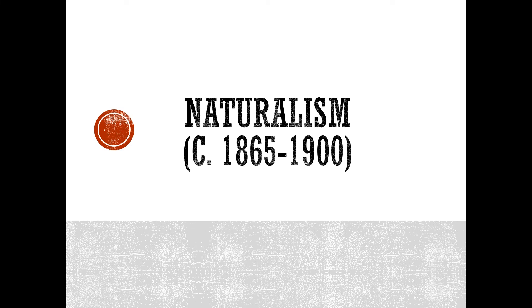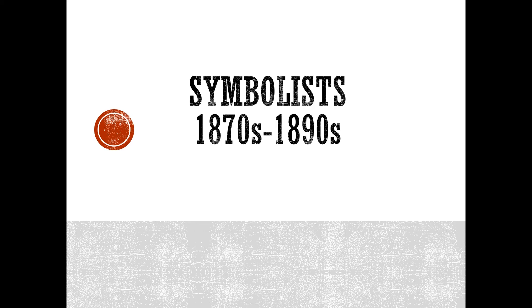Naturalism is a literary movement that used detailed realism to suggest that social conditions, heredity, and environment had inescapable force in shaping human character. Leading writers include Émile Zola, Theodore Dreiser, and Stephen Crane. Symbolists are a group of French poets who reacted against realism with a poetry of suggestion based on private symbols, experimenting with new poetic forms such as free verse and the prose poem. Arthur Rimbaud and Paul Verlaine are the most well-known symbolists, who had a seminal influence on modernist poetry of the early 20th century.